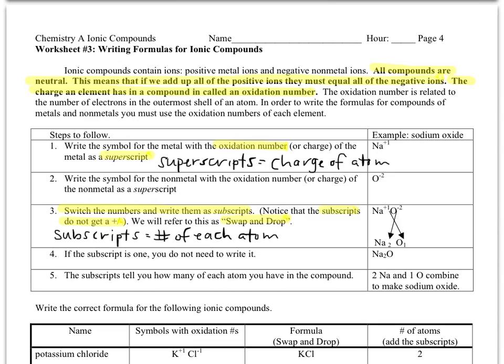This is worksheet 3 of the ionic compounds packet. In this worksheet, we're going to learn to do the reverse of what you learned in worksheet 2. In worksheet 2, you were given a formula—the letters and numbers that symbolize a compound—and you were taught how to come up with a name. In this worksheet, we're going to do the opposite, which means if we give you a name, you can tell us the formula, the symbols and subscripts that would represent that.